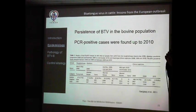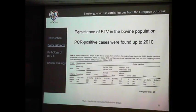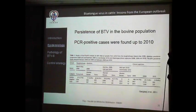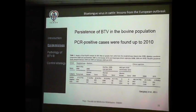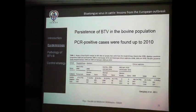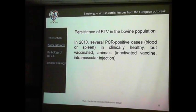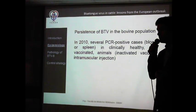Looking at the follow-up: the outbreak started in 2006, most cases were observed in 2007 and 2008, and then it started to decrease thanks to vaccination. In 2008 we began massively vaccinating in Europe — it was mandatory for two years — and you can see clinical suspicions start to drop. But in 2010 we still had some positive PCR cases in clinically healthy animals with no clinical signs, in animals that had been vaccinated.